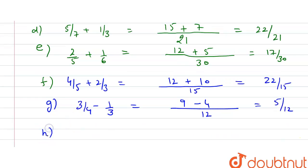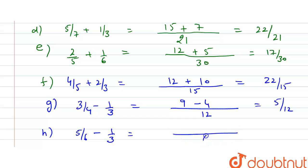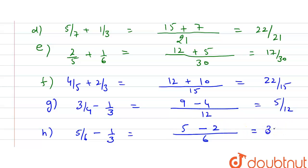Part (h) is 5/6 − 1/3. The LCM is 6. So 5 minus 2 equals 3, giving 3/6, which simplifies to 1/2.